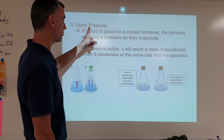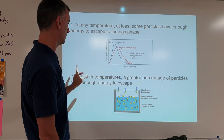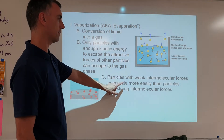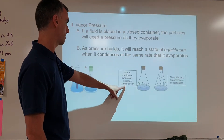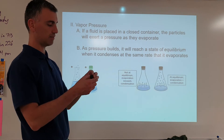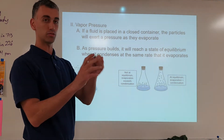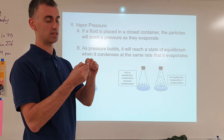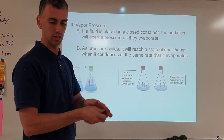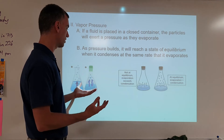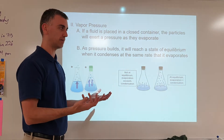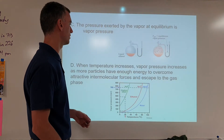Vapor pressure is a way of putting a number on this — particularly the strength of the intermolecular forces. Particles with weaker intermolecular forces evaporate more easily because they separate more easily. Particles with stronger intermolecular forces evaporate less easily because they pull together more strongly. More vapor pressure means evaporating more; less vapor pressure means evaporating less. That's essentially what vapor pressure is all about.